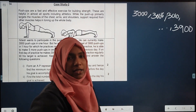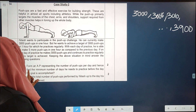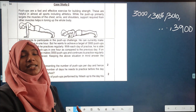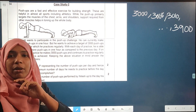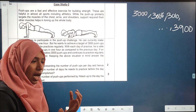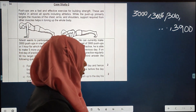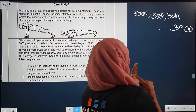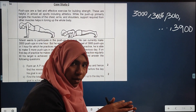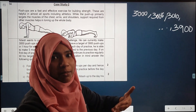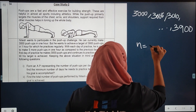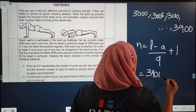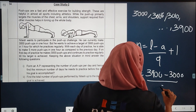Keeping the above situation in mind, we need to find the AP representing the number of push-ups per day. The AP starts at 3000 with a common difference of 5. To find the minimum number of days, we use: n = (last term − first term) / common difference + 1 = (3900 − 3000) / 5 + 1.